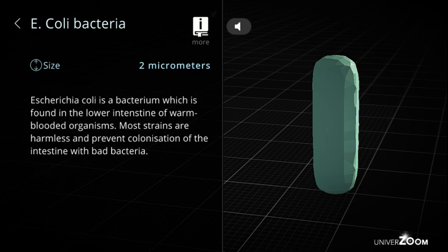E. coli bacteria, size: 2 micrometers. Escherichia coli is a bacterium which is found in the lower intestine of warm-blooded organisms. Most strains are harmless and prevent colonization of the intestine with bad bacteria.